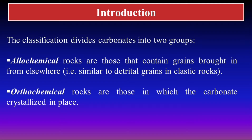Allochemical rocks are those in which the grains present in the rocks are transported or come from elsewhere. This means the sediments and grains did not deposit at the same place — they come from an outside location, similar to the detrital grains found in clastic rocks.